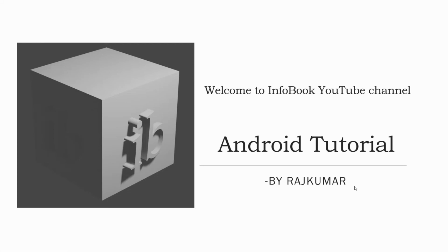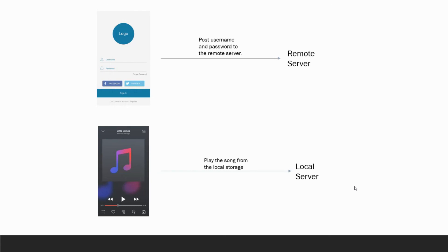Welcome to InfoboQt channel, this is Rajkumar. Basically there are two threads in Android: main thread and worker thread. If any network operation is performed in the main thread, it starts skipping frames and eventually crashes.